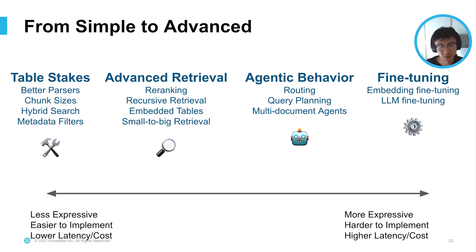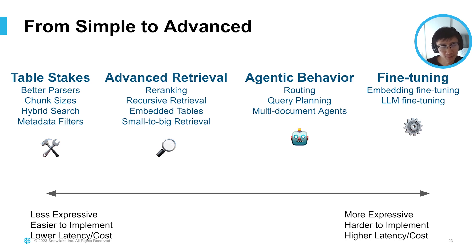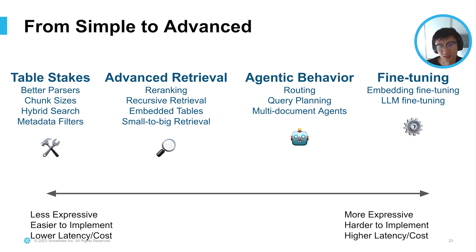As you get to the right of the spectrum, you get to harder stuff that's more expressive and potentially able to do a lot more things, but harder to implement with potentially higher latency and cost. Table-stakes stuff includes basic things everybody should try: better parsing strategies, chunk sizes, hybrid search, and metadata filtering. Advanced retrieval contains more advanced strategies beyond top-K lookup, like re-ranking, recursive retrieval, and dealing with embedded tables. Agentic behavior uses the LLM as a reasoning engine, allowing more complex tasks like routing, query planning, and multi-document agent architectures. And then fine-tuning, where you actually modify the weights of the model.